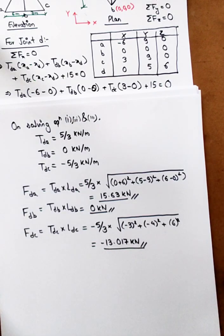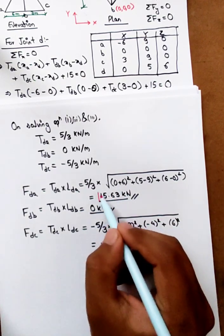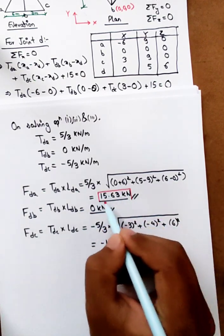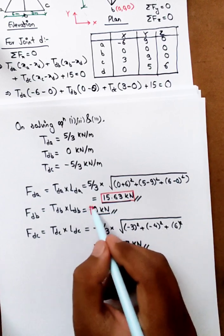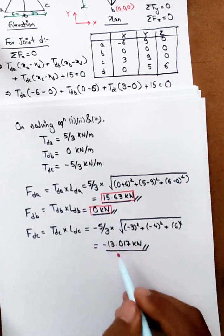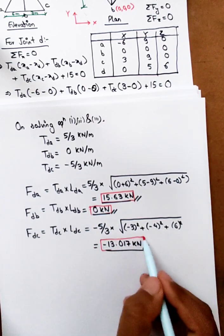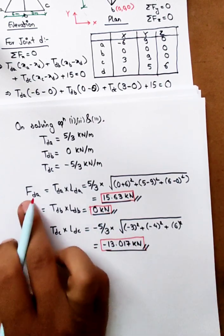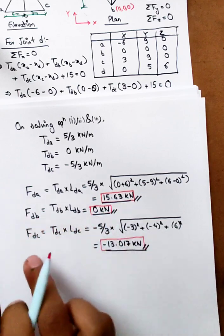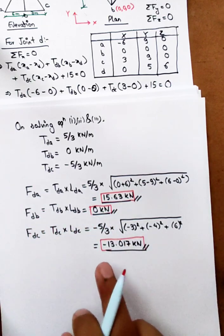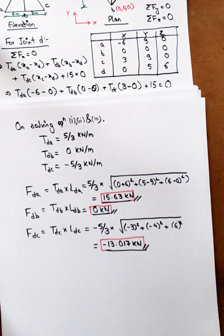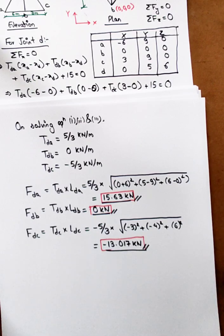This is the final answer: FDA = 15.63 kN (tensile), FDB = 0 kN, FDC = −13.017 kN (compressive). This completes the space truss problem. You can see the next video for further examples.